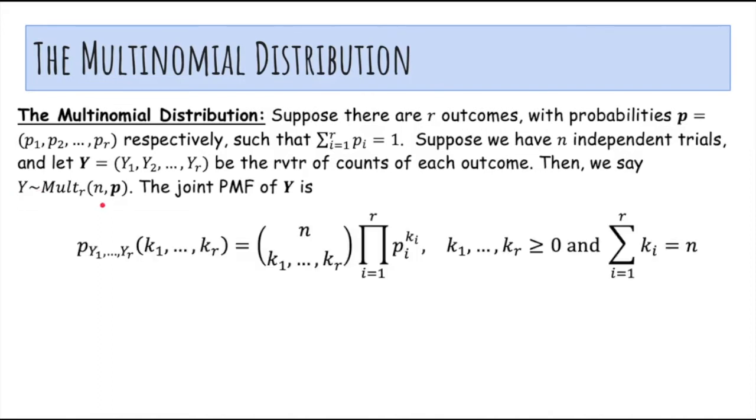The PMF of Y is this ugly thing, but it's actually not so bad. So basically what this is saying is that you have, for each outcome, take the product over all the outcomes of the probability of outcome i raised to the power of k_i, which is the number of times the outcome occurred, and then this multinomial coefficient just says how many ways are there to rearrange the outcomes that still produce the same counts.